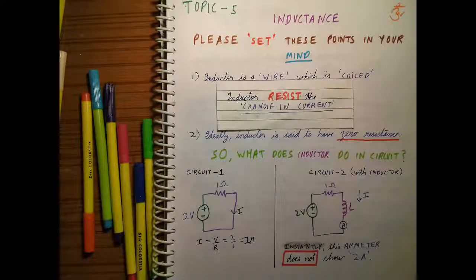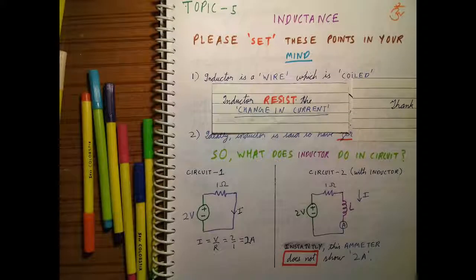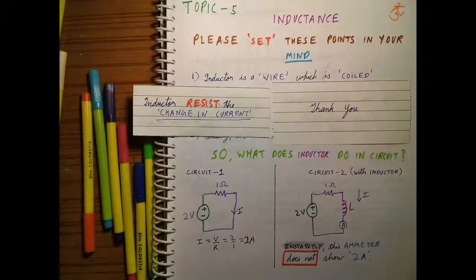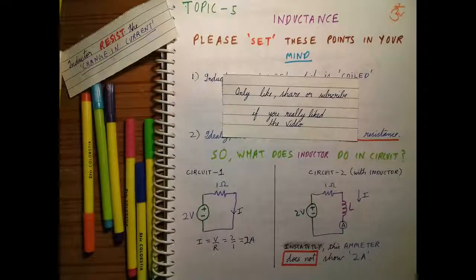Let's revisit Circuit 2. The inductor resists the change in current. As soon as the circuit is completed using the ammeter, the current should have flowed, but before connecting it the current was zero. After connecting, the current should have increased — so there is a change in current. That's why the inductor comes into picture, and that's why the ammeter does not show 2 amperes instantly.